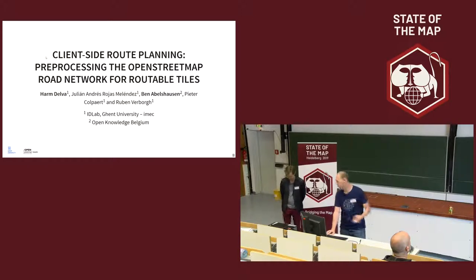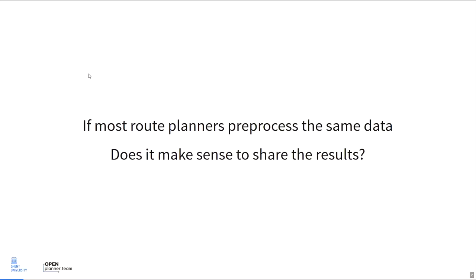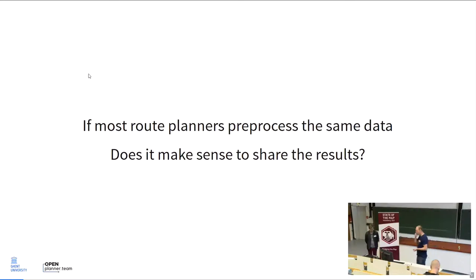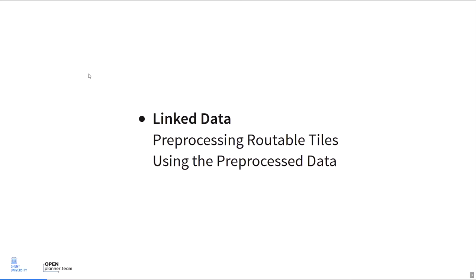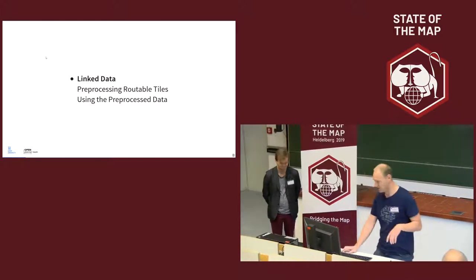So what is this about? Most route planners out there do the same work over and over again. Even all the open source route planning instances pre-process the same data repeatedly — the same road network, the same public transport schedules. Does it make sense to share the result? We think yes. I'll explain a bit about linked data and how we published the OpenStreetMap network in a new way, then Harim will present the actual work done in the second part.